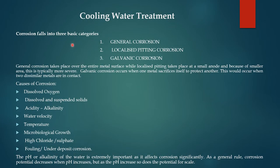If the cooling water treatment is based on corrosion, corrosion falls in three basic categories: general corrosion, localized pitting corrosion, and galvanic corrosion. General corrosion takes place over the entire metal surface. Localized pitting takes place at a small anode and because of the smaller area, this is typically more severe — pitting will be more severe than general corrosion.